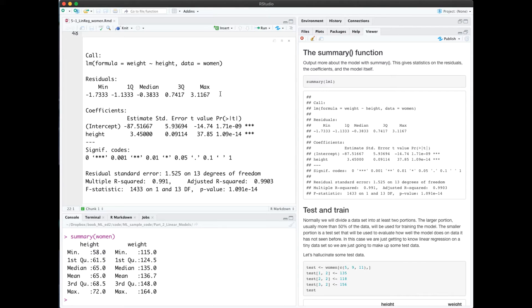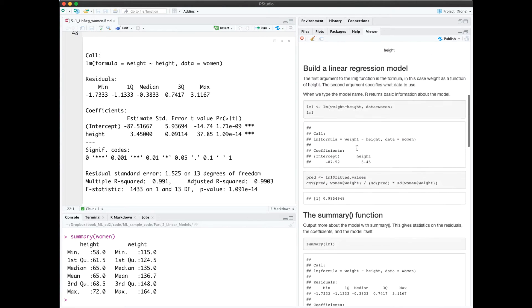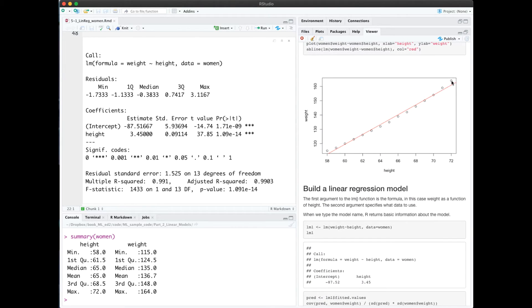These are small values from negative 1.7 to 3.11. And if we look back at our graph, we see that most of the points are very close to the line.